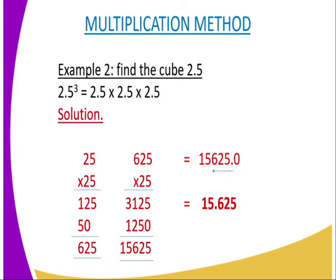And therefore, you are supposed to move three steps backward. And therefore, the point will move from in between 5 and 0 up to 5 and 6. And therefore, the answer becomes 15.625 as the answer.